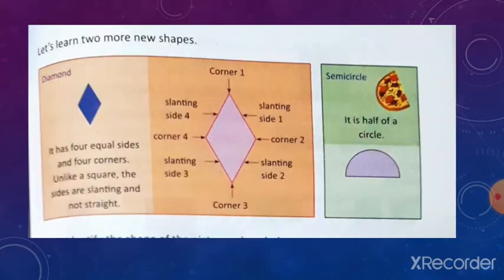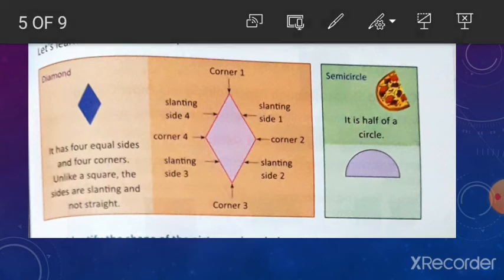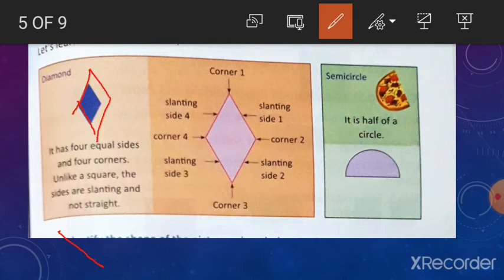Next page, page number 81. Diamond. Another shape — diamond. It has four equal sides and four corners. Unlike a square, the sides are slanting and not straight. You can see these are slanting lines. This is a slanting line, and this is another slanting line. So, four slanting sides and four corners — that is diamond.